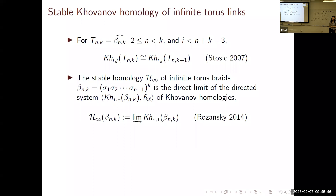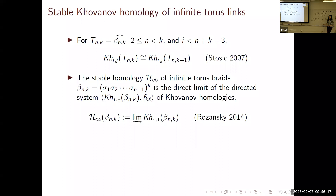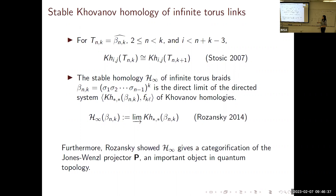Regarding the grading shift: he just shifts everything back so that the maps from fewer twists to more twists become inclusion maps—you just need to shift the grading back by multiplying by a correction factor. So you have the directed system, you have the directed limit, and therefore a well-defined homology comes from this infinite construction. Rozansky also shows that this stable homology actually categorifies the Jones-Wenzl projector.